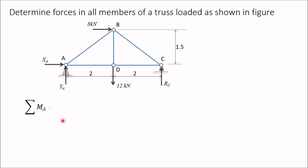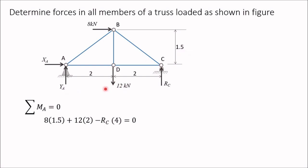First we apply sigma MA equal to zero — moment about point A equal to zero — so that XA and YA moments become zero. The remaining three forces are 8 kN, 12 kN, and RC. Taking moments: 8 into 1.5 is clockwise (positive), 12 kN is also clockwise with distance 2, and RC is anticlockwise with perpendicular distance 4. Solving this gives RC equal to 9 kN.